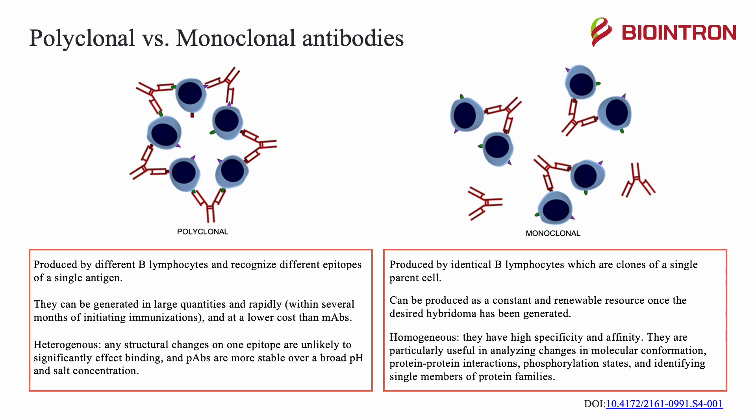Another main difference is that polyclonal antibodies are heterogeneous. Any structural changes on one epitope are unlikely to significantly affect binding, and polyclonal antibodies are more stable over a broad pH and salt concentration. On the other hand, monoclonal antibodies are homogeneous. They have high specificity and affinity, and are particularly useful in analyzing changes in molecular conformation, protein-protein interactions, phosphorylation states, and identifying single members of protein families.